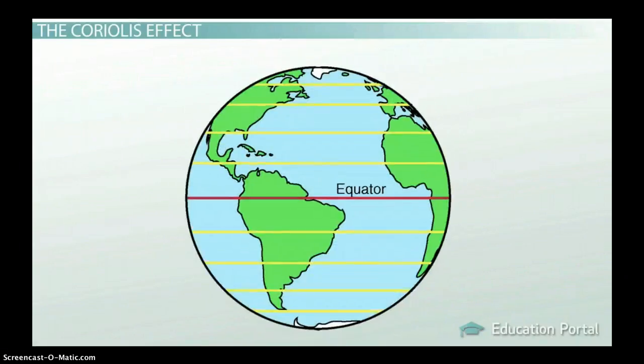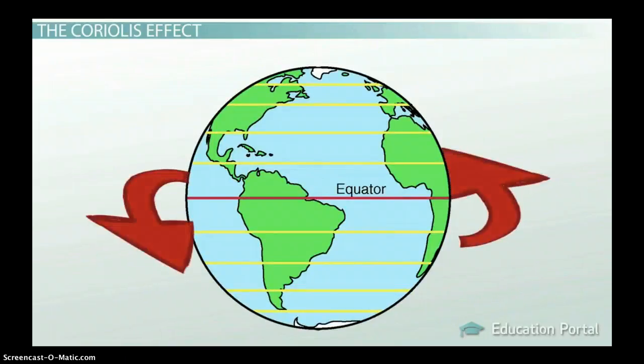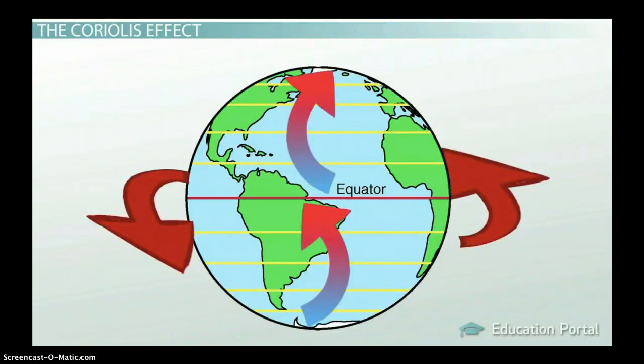This is what happens to wind on Earth. As Earth rotates, all free-moving objects like air, water, airplanes, and even snowballs appear to leave their straight-line path. Nothing is free from the Coriolis effect.